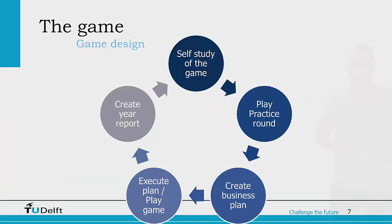The game itself is set up so that you start with this introduction, then you learn about the game. We'll play a practice round to get to know the game in action. After the practice round, before the real playing of the game, you will create a business plan setting out what kind of ship you will buy, where you will be sailing, what kind of cargoes will be your focus, and what your strategies will be. Then you will execute your business plan in a year, and after that year you will create a year report, which will discuss how your year has gone, how much of your strategy you were able to achieve, and highlight your most important aspects.